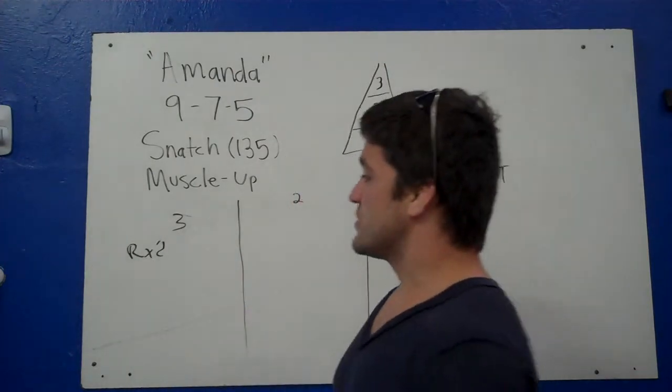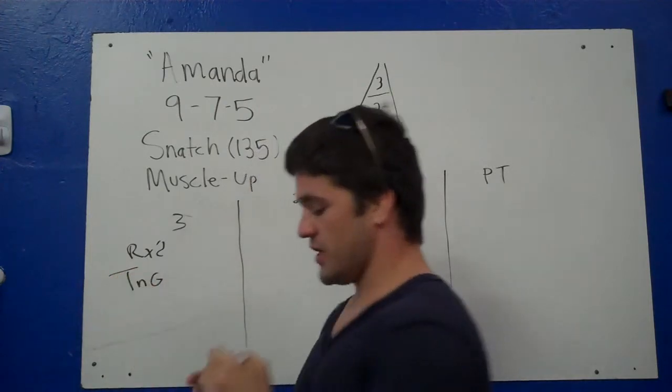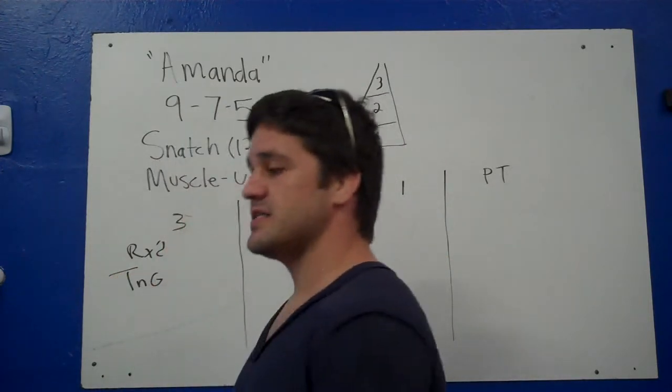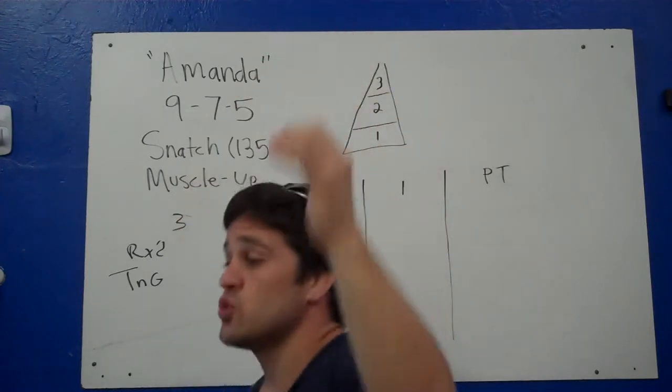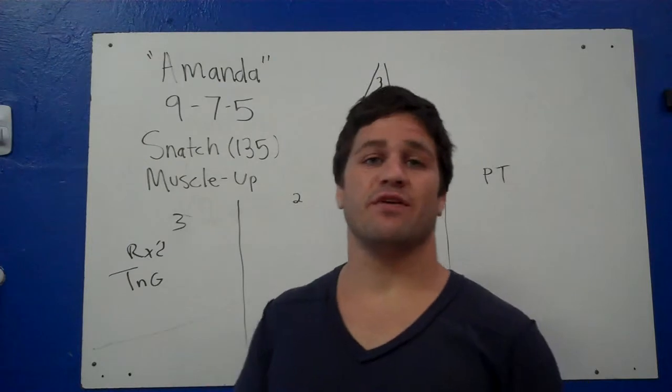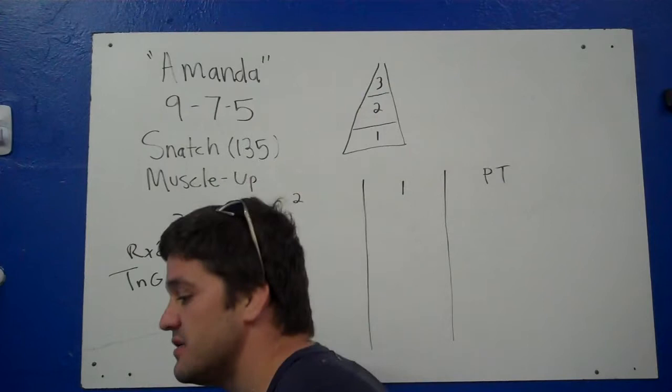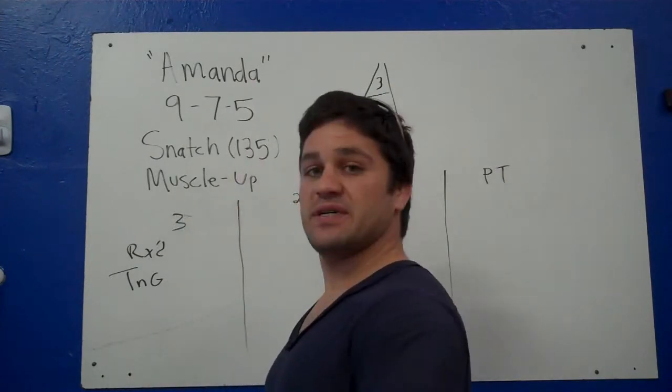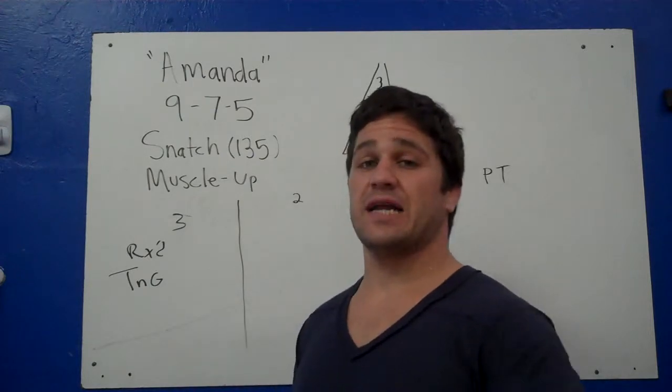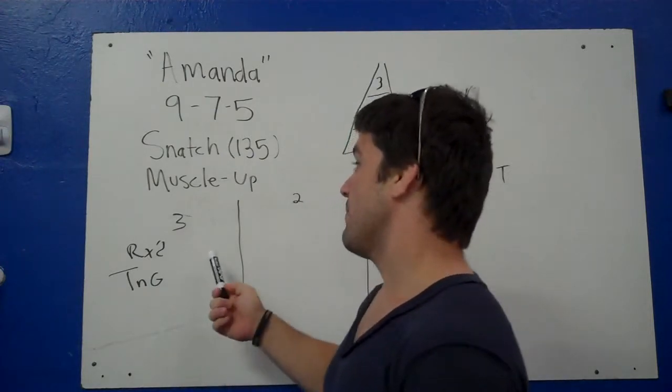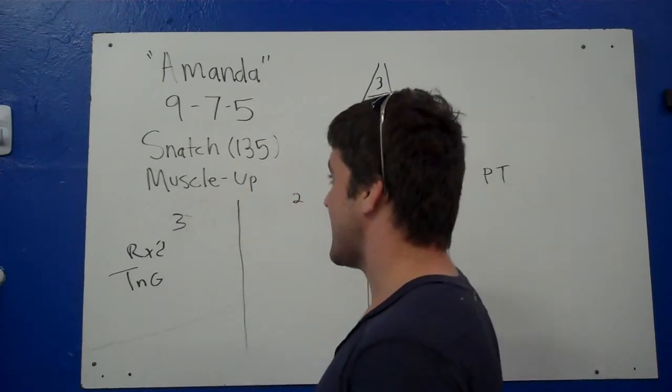The standard for the snatch is what we would call a touch-and-go, where the bar is set up on the ground, I set up, I snatch it, and drop and catch it in the bottom of the overhead squat position in one smooth movement. You can't bring it up to the hang position, power snatch it, and then squat. That is not allowed. Not for this workout. It's a touch-and-go, which makes that snatch really difficult, especially when you're really tired.